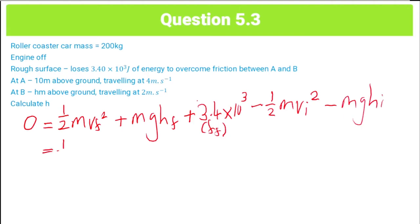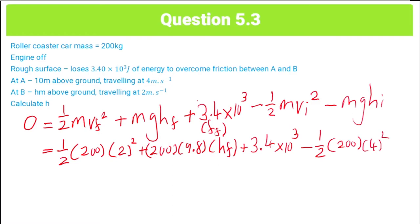Now, if we put in our relevant values for this equation, we have half into 200 into 2 squared, plus 200 into 9.8 times our final height which is unknown, plus 3.4 times 10 to the 3, minus a half into 200 into 4 squared, minus 200 times 9.8 times our initial height of 10. And if you solve for H in this case, you also get a final height of 8.88 meters.